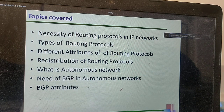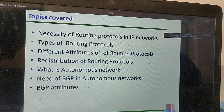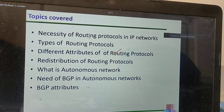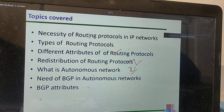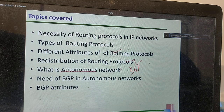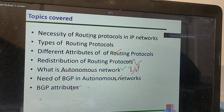There are different types of routing protocols, and each routing protocol has some attributes for selecting the best path and for collecting information. We will see what those attributes are. Another point we are going to discuss is redistribution of routing protocols. There is also an important protocol called BGP — Border Gateway Protocol — which uses the concept of autonomous systems and autonomous numbers. We will see what autonomous systems are and what the need of BGP is in autonomous networks, including BGP attributes. These are our agenda for this session.